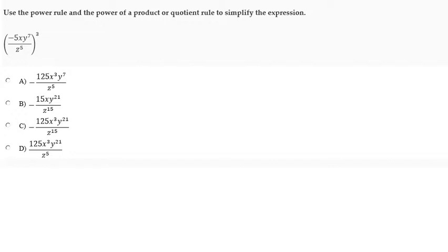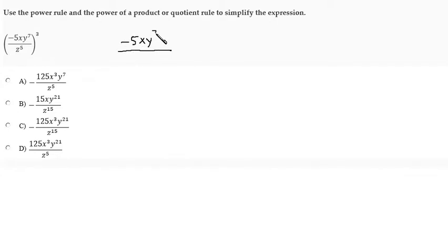Use the power rule and the power of a product or quotient rule to simplify the expression: the quotient of negative 5, x, y to the seventh, over z to the fifth, all raised to the power of 3.